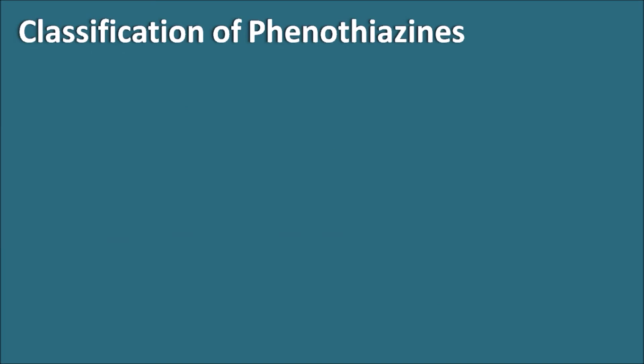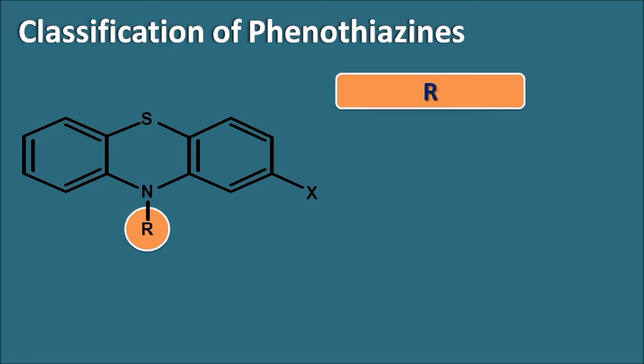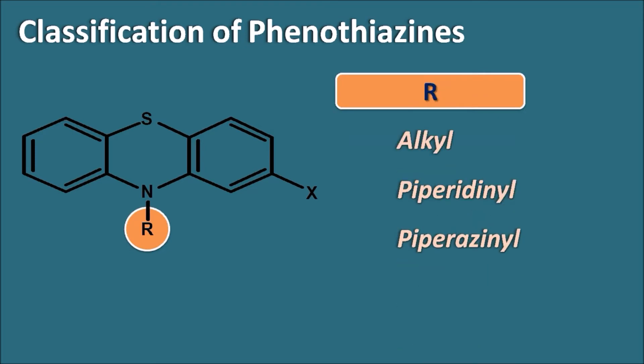Classification of phenothiazines: phenothiazines can be classified based on the side chain present on the ring system at the nitrogen. The R group may be an alkyl group, a piperidine group, or a piperazine group. In this way, phenothiazines are classified into mainly three categories based on the side chain present on the ring system.